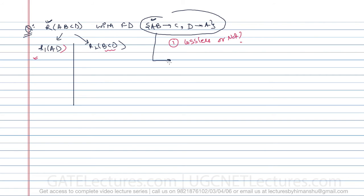From the given functional dependencies, let us compute closures. AB closure = ABC (we cannot get D). D closure = AD (D gives A, but nothing else follows). So AB closure is ABC and D closure is AD.